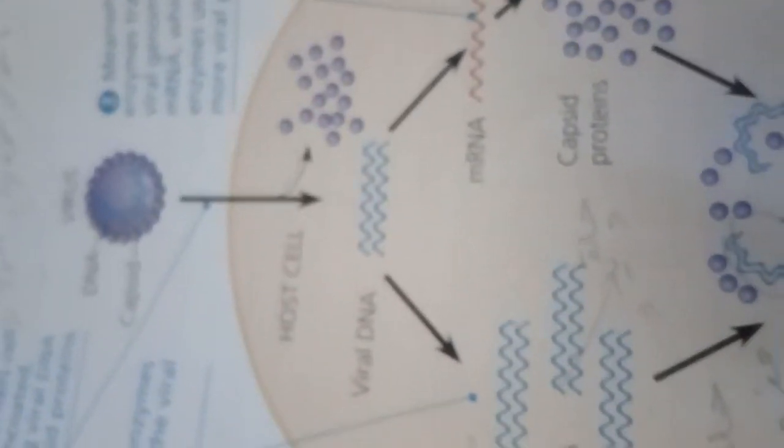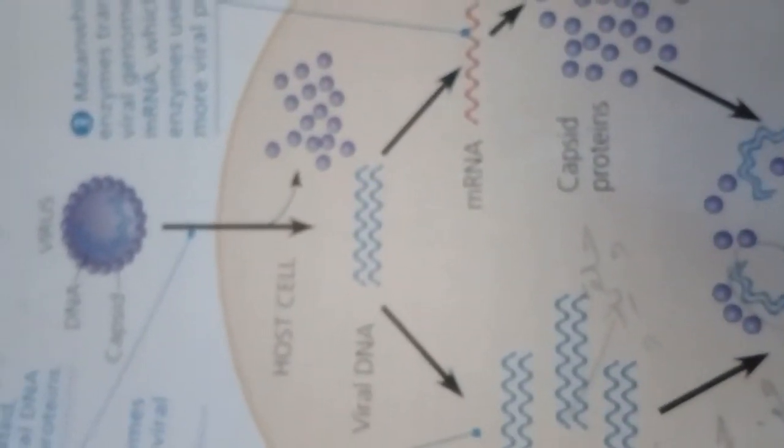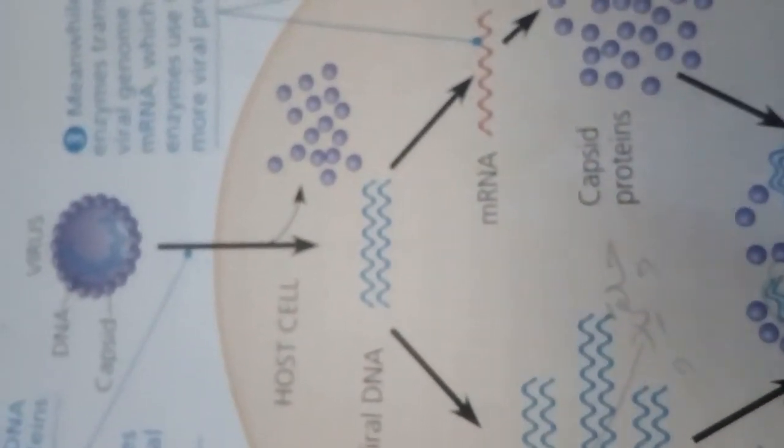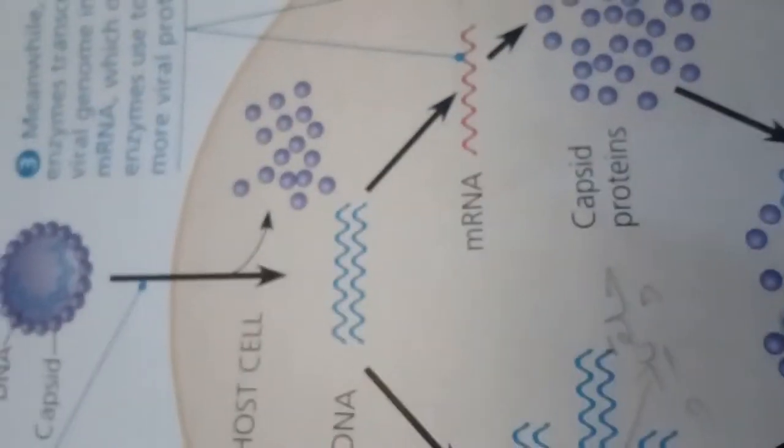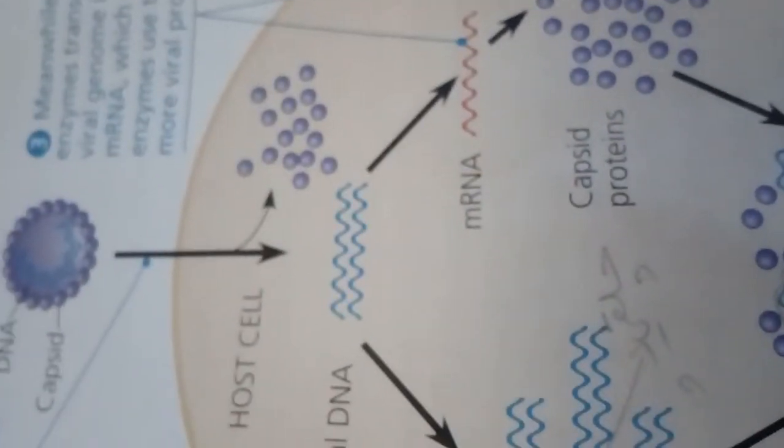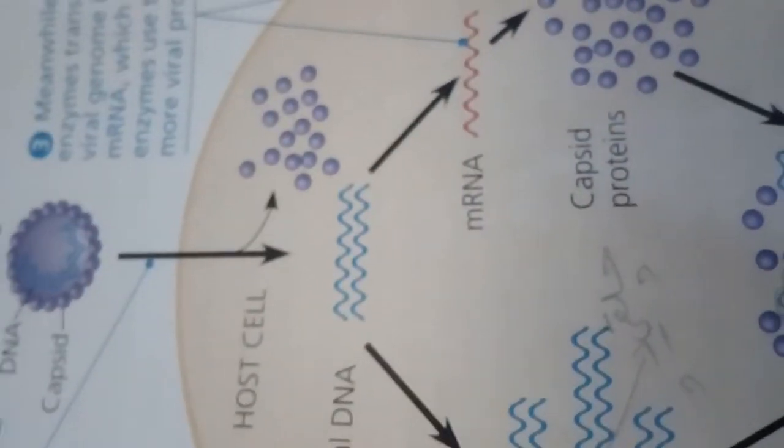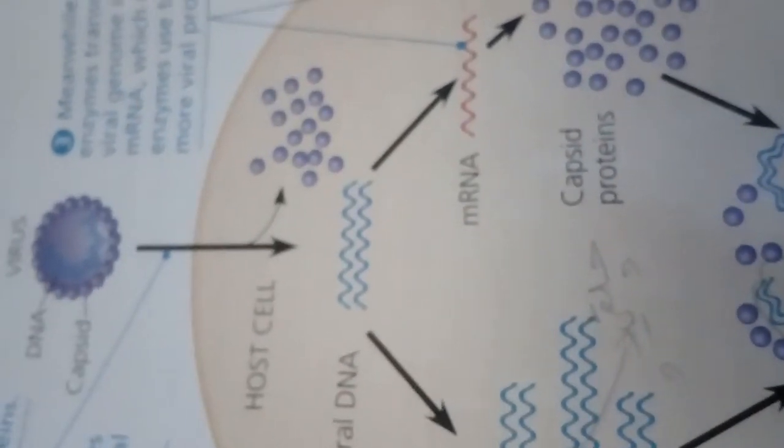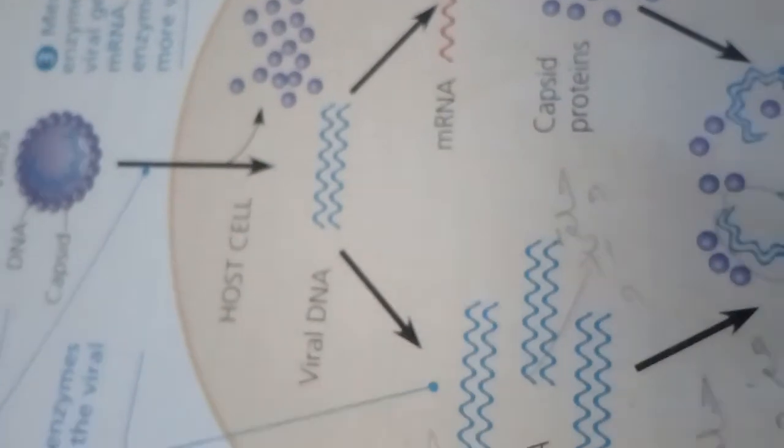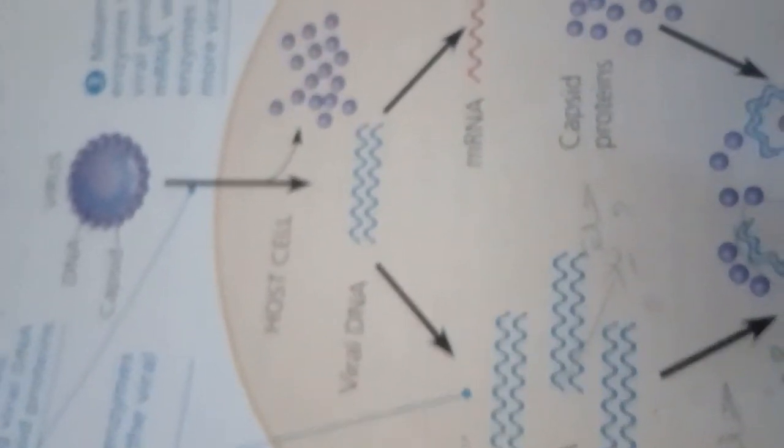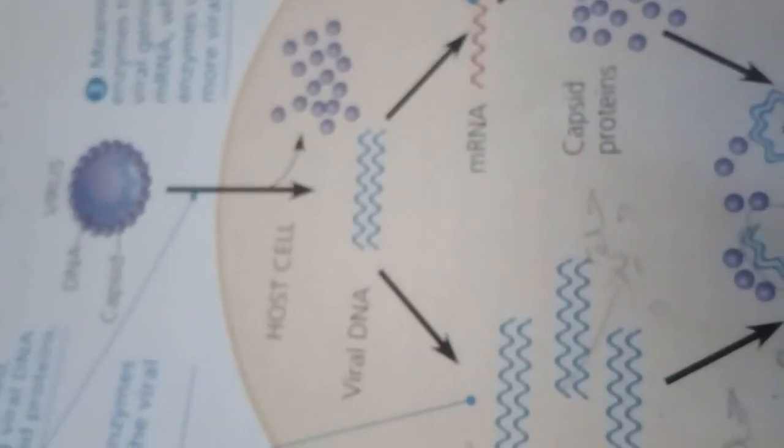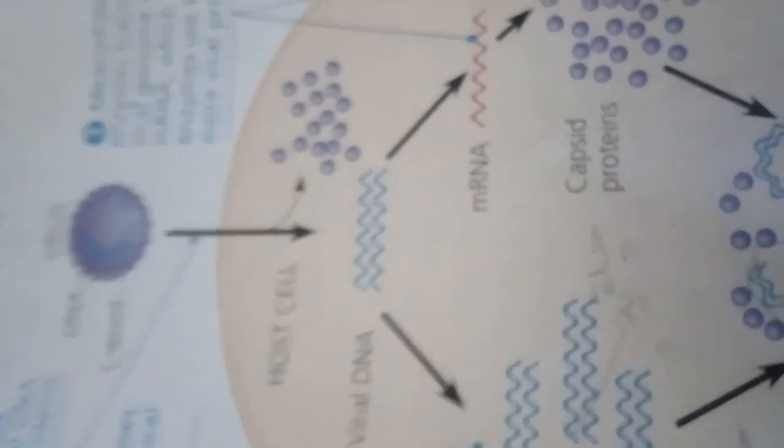The simplest type of viral reproductive cycle ends with the exit of hundreds or thousands of viruses from the infected host cell, a process that often damages or destroys the cells. Such cellular damage and death, as well as the body's responses to this destruction, cause some of the symptoms associated with viral infections. The viral progeny that exit a cell have the potential to infect additional cells, spreading the viral infection.